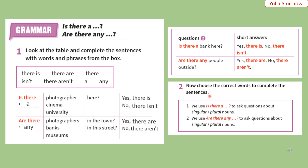Choose the correct words to complete the sentences. Оберіть правильні слова, щоб завершити речення. 1. We use 'is there a' to ask questions about singular — ми використовуємо фразу 'is there a', щоб побудувати питальне речення в однині. 2. We use 'are there any' to ask questions about plural nouns — ми використовуємо фразу 'are there any', щоб поставити запитання про множину.